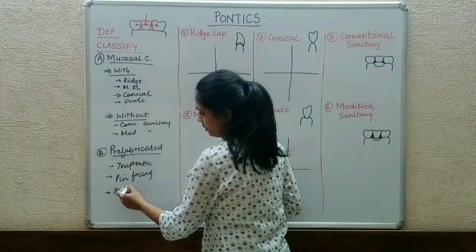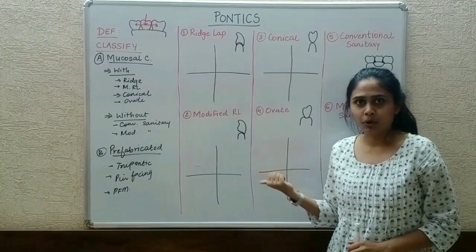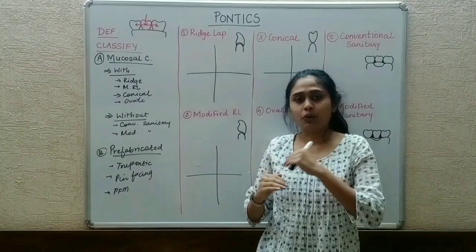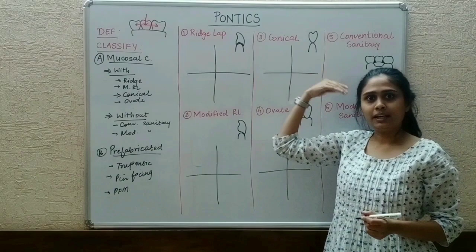So that covers the definition and classification of pontics. Now we go on to the types. First, ridge lap and modified ridge lap. In ridge lap — as the name says, 'lap' comes from the word overlap — this pontic overlaps the ridge both buccally as well as lingually.